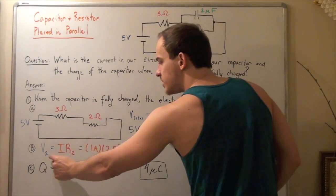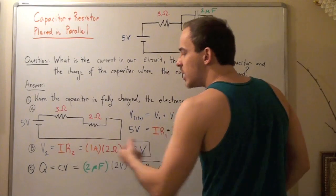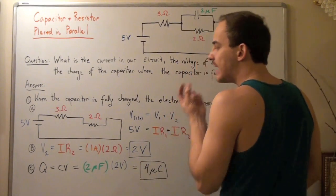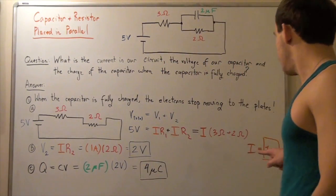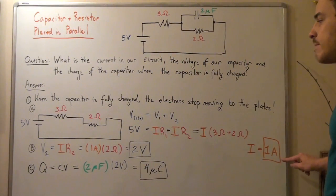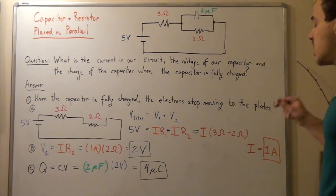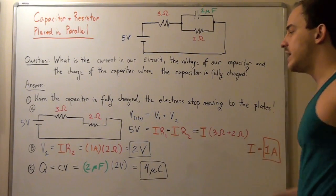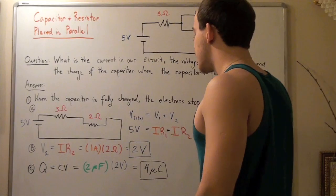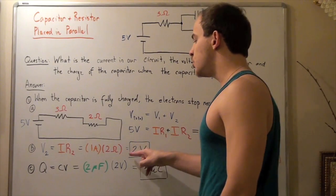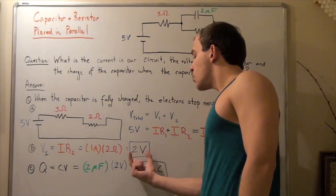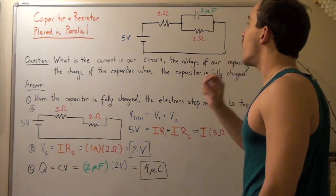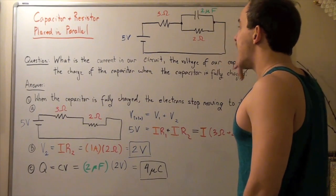So V2 is equal to I times R2. We know R2 is 2 ohms and I is 1 ampere. We plug in 2 ohms and 1 ampere, and 1 ampere times 2 ohms gives us 2 volts. So 2 volts is the voltage on this resistor as well as on our capacitor.